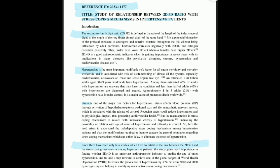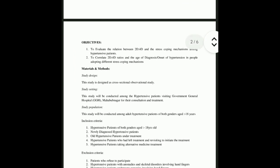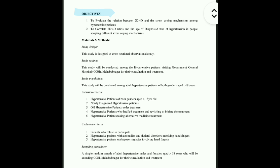Then comes the need for the study — explaining why this study is needed. After writing that, you have to write your objectives. Objectives can be 1, 2, or 3, but there is a word limit for that also. Here the objective is: to evaluate the relation between 2D:4D ratio and the stress coping mechanism among hypertensive patients. It is similar to the title, so mostly the title will be explaining the whole study.